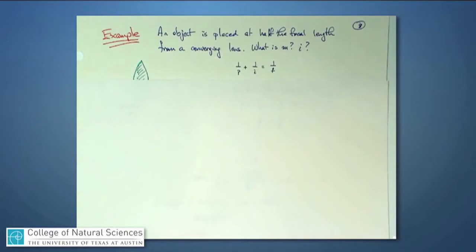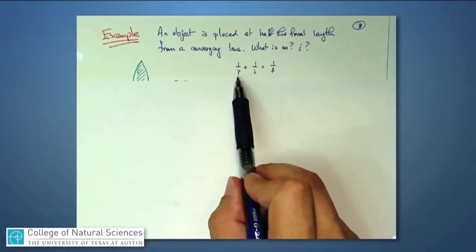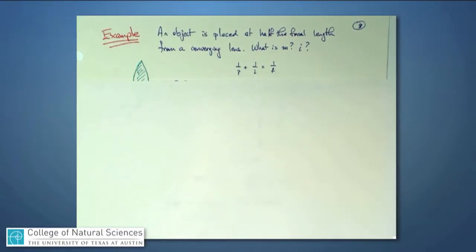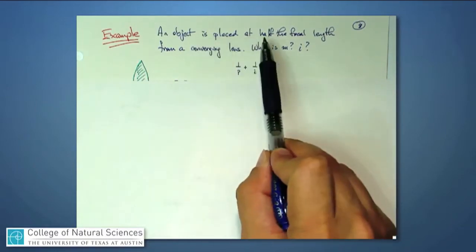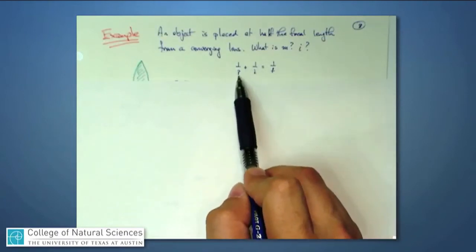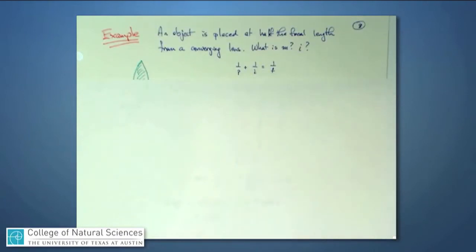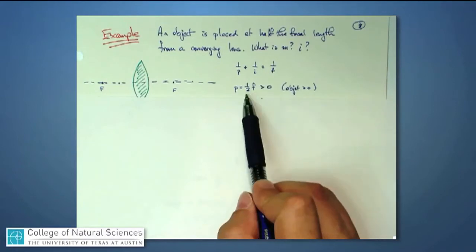Once again, there are two techniques that you could use to solve for this. We'll go through the algebraic technique first. We go back to our expression, 1 over p plus 1 over i is 1 over f. And you could immediately start being concerned because you'd say, well, I haven't been told any of these numbers yet. But you have been told one particular thing here, and that is that the object is placed at half the focal length. That tells us something about p. p, in other words, is 1 half f.